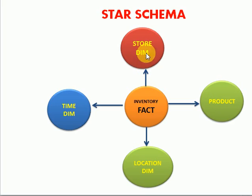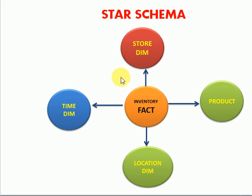In star schema, the relationship is only dimension to fact. But if you are looking at snowflake schema, there you can find dimension-to-dimension as well as dimension-to-fact relationships. Why? Because snowflake schema uses normalized tables, but in star schema, those dimension tables are denormalized tables.